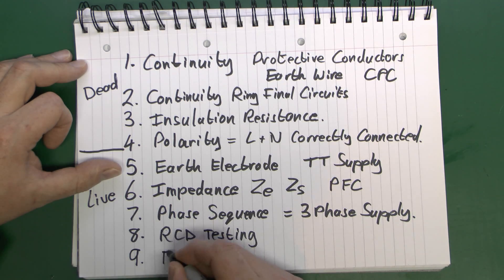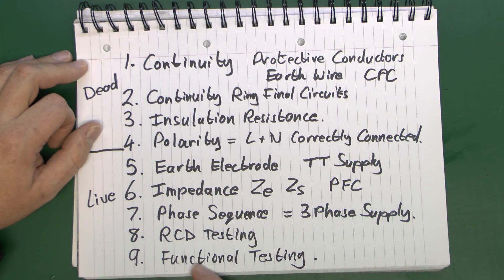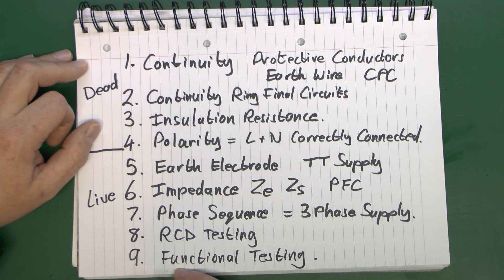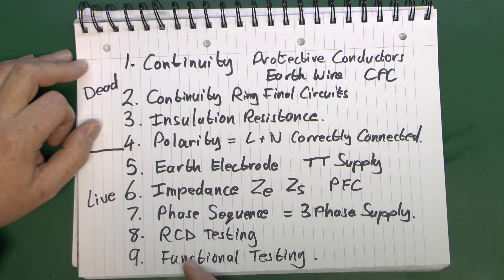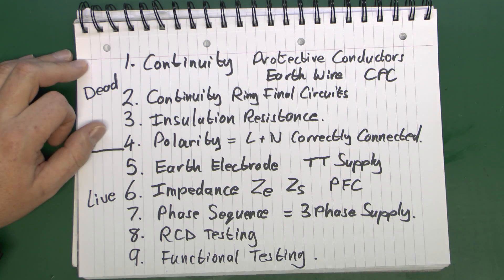And finally, number nine is functional testing. This basically means you're going to go around the building and make sure things like lights actually turn on and off from the switches controlling them. Any kind of fixed equipment — such as water heaters or storage heaters — make sure it does actually switch on and off and work as expected. It's worth testing at least one socket outlet per circuit to make sure it does actually power things as you'd expect. A handy way is just to plug in a kettle. You need to make sure all the equipment turns on and off as expected, because it's not unheard of for switches to be defective even if brand new — and it would be completely useless if occupiers moved into the building and found they couldn't turn the lights on.